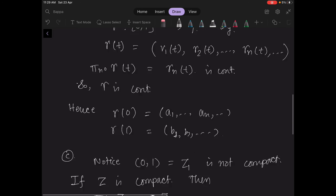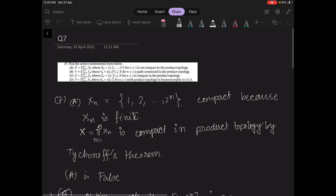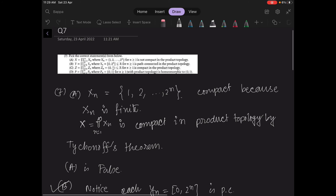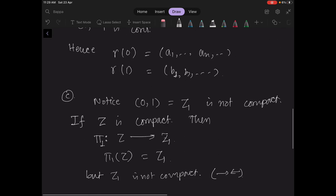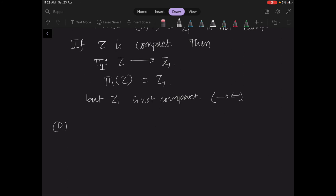Now option D says that P equals product of Pn, where Pn is homeomorphic to 0,1. Now suppose this is true. Suppose 0,1 is homeomorphic to P, where F is this homeomorphism.